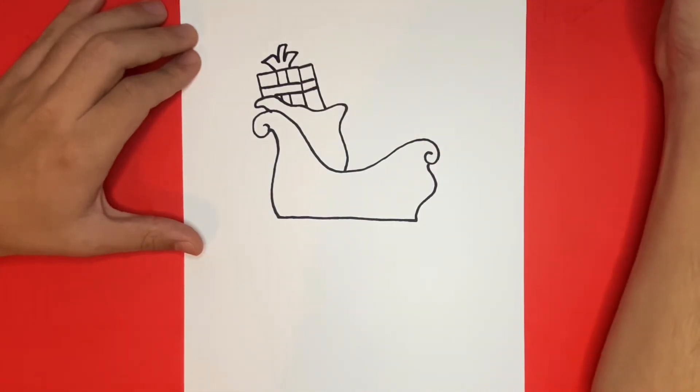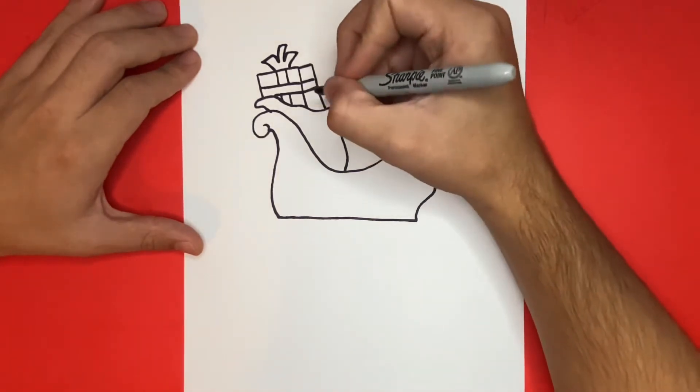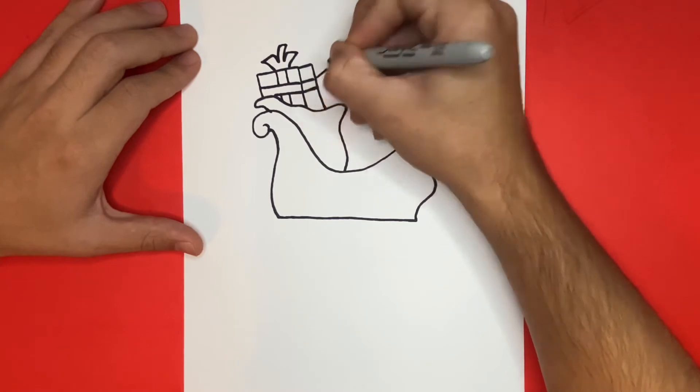Now we have our first present drawn but we have to draw a couple more. We're going to draw the next one a little to the right and it will appear to be a little bit smaller than the one that we just drew on the left hand side.